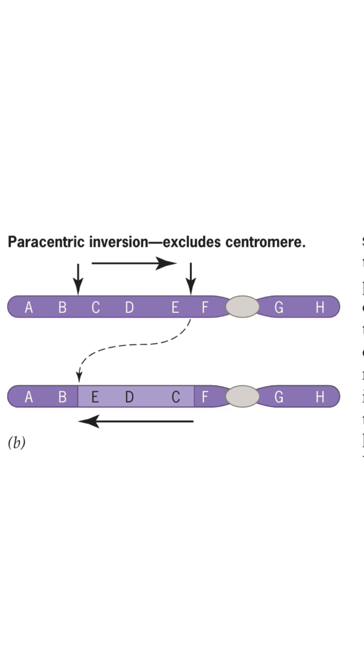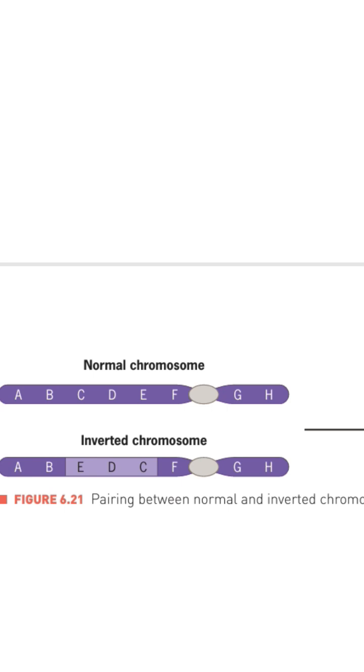An individual in which one chromosome is inverted but its homologous one is not is said to be an inversion heterozygote. During meiosis, the inverted and non-inverted chromosomes pair point for point along their length.